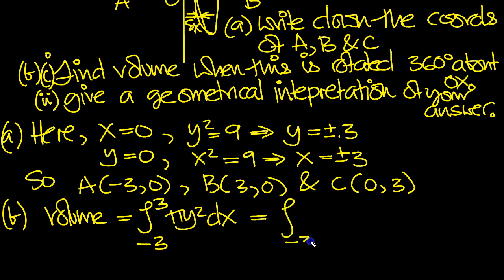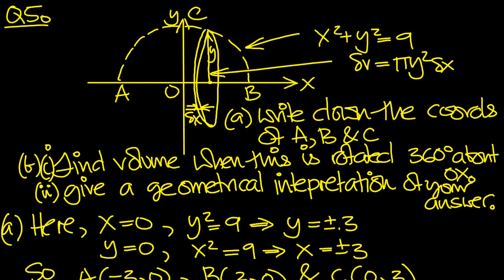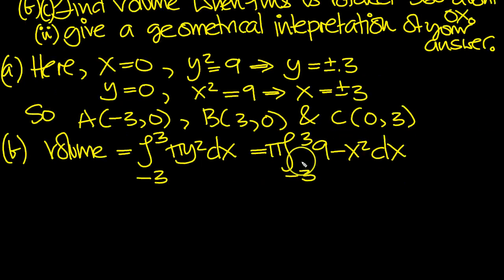So we've got the integral between -3 and 3 of π. Put that at the front there. y², x² + y² is 9. So this is just 9 - x² dx, because we can just put it in there, because y² is 9 - x². So this is a simple integral.